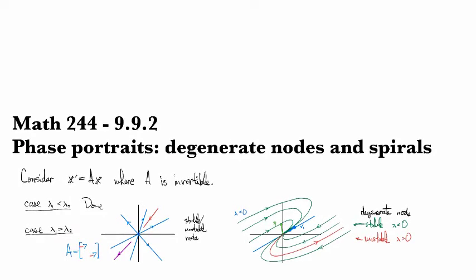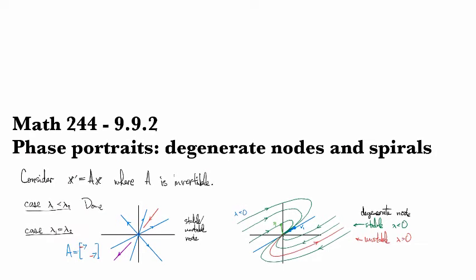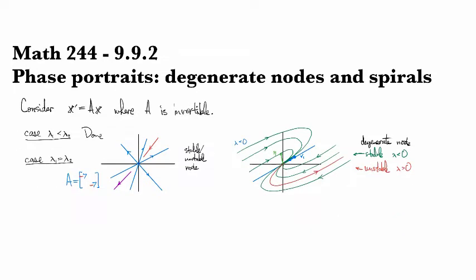And then if you're wondering about how to determine which way the spiral is going, if it were the other way around, so that we had our eigenvector here, and then our degenerate eigenvector down here, then we would be passing through in the other direction. Like that.